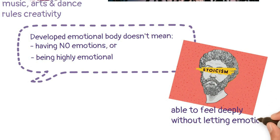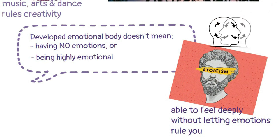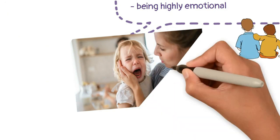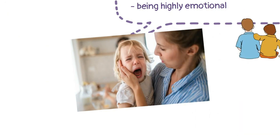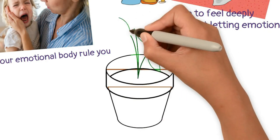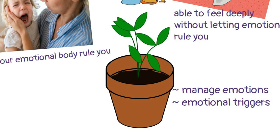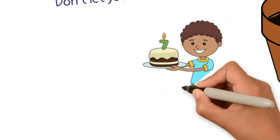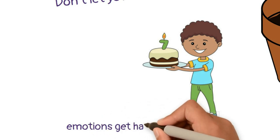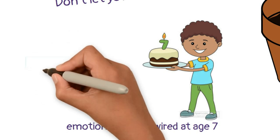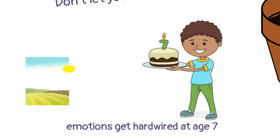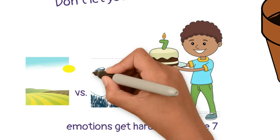One of my teachers says this is often where the stoic philosophy is misunderstood, because true stoicism is not void of emotions — on the contrary, it's about feeling deeply but not letting your emotions rule you. We need to feel deeply, to have empathy, love, compassion, and care — not just for ourselves, but also for people around us. Because if we let our emotions rule us, we become like a two-year-old throwing tantrums. The emotional body grows when you learn how to manage your emotions and emotional triggers without letting them overwhelm you. It is said that the majority of humans have an emotional body of a seven-year-old — whatever emotions you had at that time get hardwired by age seven, becoming your default emotional landscape.